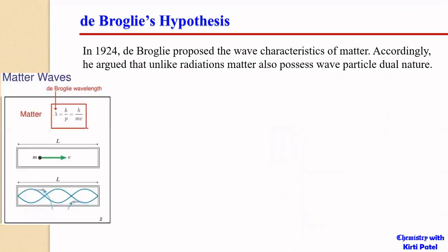Based on this hypothesis, de Broglie suggested that matter is not only moving in one direction with velocity V, but it also has a wavelength associated with it. This wavelength may be very much smaller than what we have for waves, but still matter possesses certain wave properties.